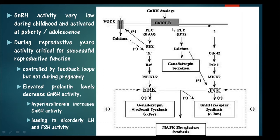GnRH binds to its receptor, a G protein coupled receptor, which activates phospholipase C. Phospholipase C cleaves phosphatidylinositol diphosphate into diacylglycerol (DAG) and inositol triphosphate (IP3). DAG activates protein kinase C. IP3 mobilizes intracellular calcium from the endoplasmic reticulum, and PKC also activates voltage-gated calcium channels so that more calcium enters the cell.